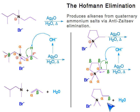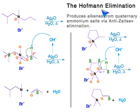The double bond forms between the alpha and beta carbon. You also produce water. That is the extremely cool Hofmann elimination.